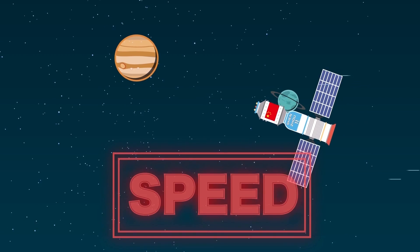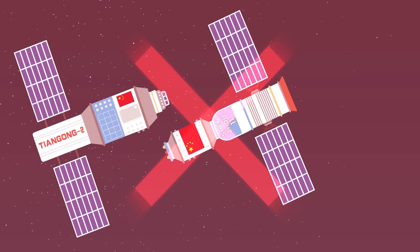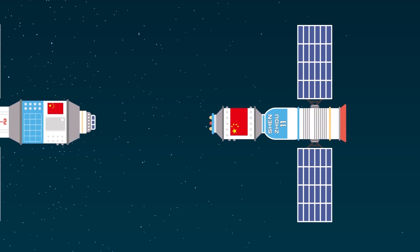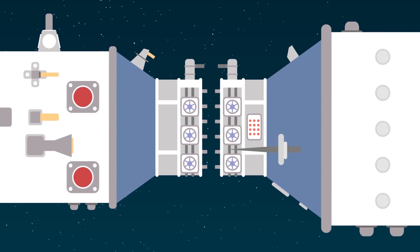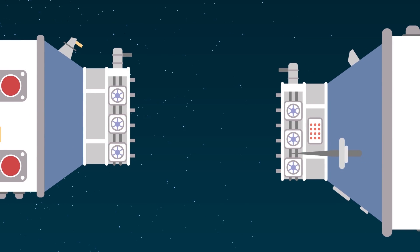Before docking with the space lab, the Shenzhou-11 will need adjustment to both speed and position. Too fast, it will crash into the Tiangong-2, and too slow, it simply won't make it. The Shenzhou-11 will need precise positioning to dock with the space lab. Even a tiny deviation could cause the two to drift apart.